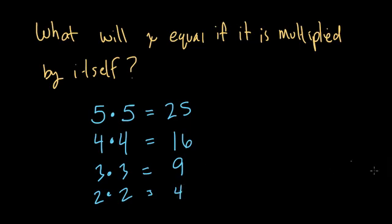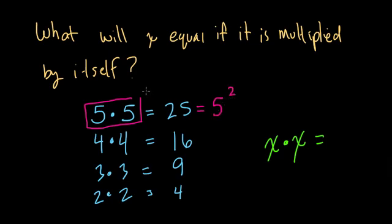So we're asking here, if you take any number x and you multiply it by itself, in general, how can you represent the answer? What you might notice here is that I could write 5 times 5 as 5 to the second power. They mean the same thing, right?